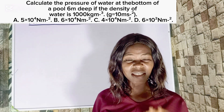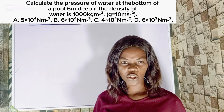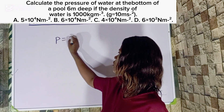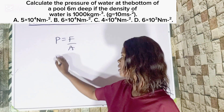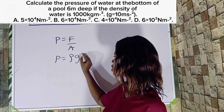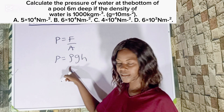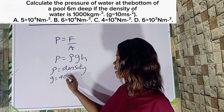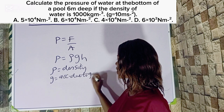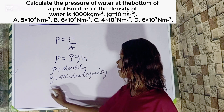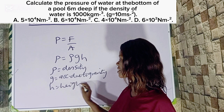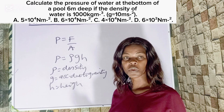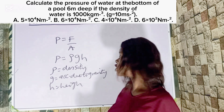Solving this question, you must understand what pressure is. Pressure equals force over area, or pressure equals rho times g times H. What is rho? Rho is density. G is acceleration due to gravity, and H is height. We have the density of water, we have the acceleration due to gravity which is constant, and we have the height. So putting all those things together, we can get our pressure.